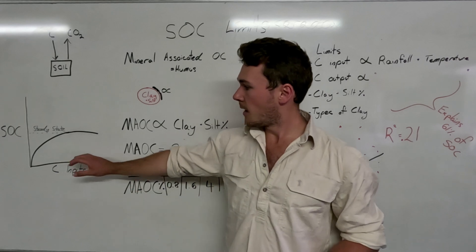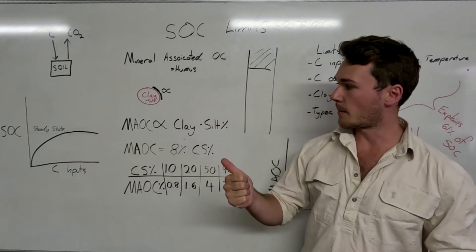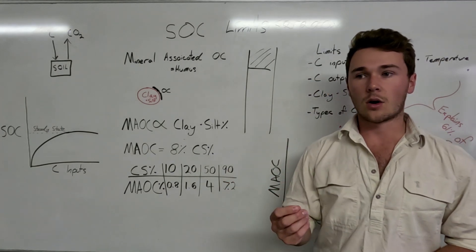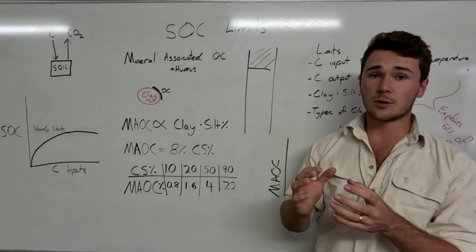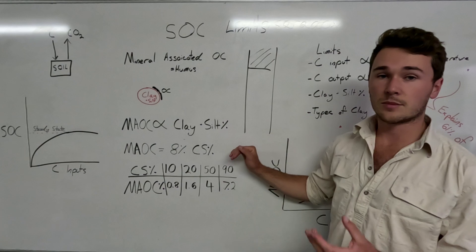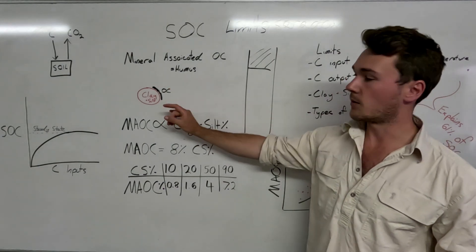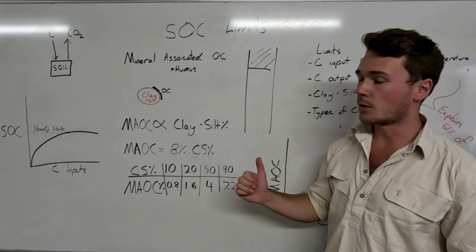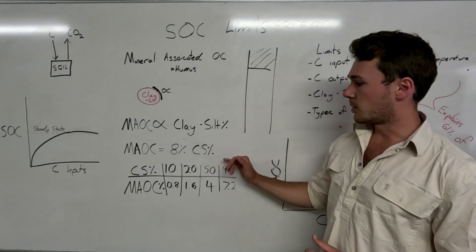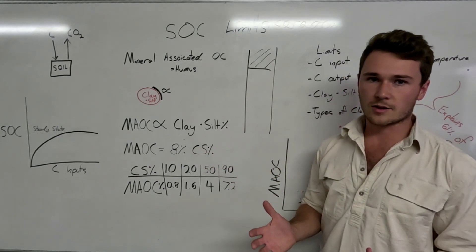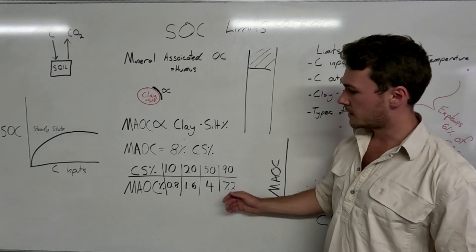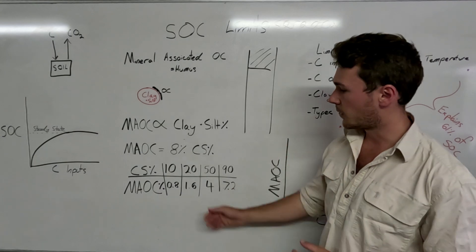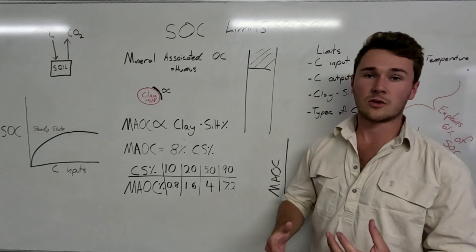The steady state is made up of both the labile carbon available to microbes and the mineral associated soil organic carbon. The big number everyone wants is: what percentage of the clay and silt particle can be saturated? It seems like 8% of the clay and silt percentage is available for organic matter to stick to clay. So the higher your clay or silt content, the higher the amount of stable carbon you can hold. With 10% clay and silt, you can hold 0.8% mineral associated soil organic carbon.